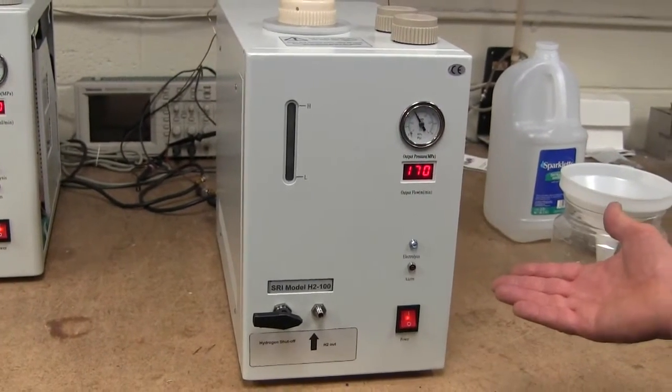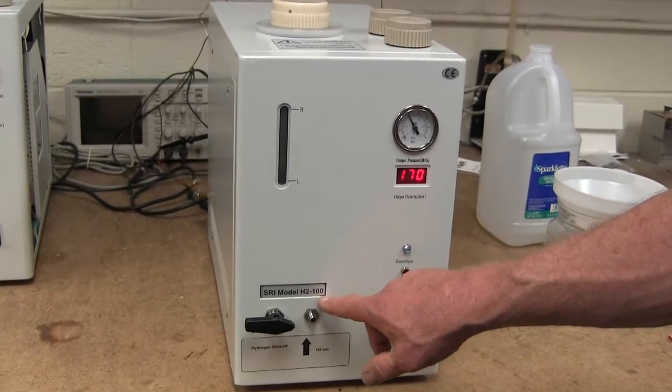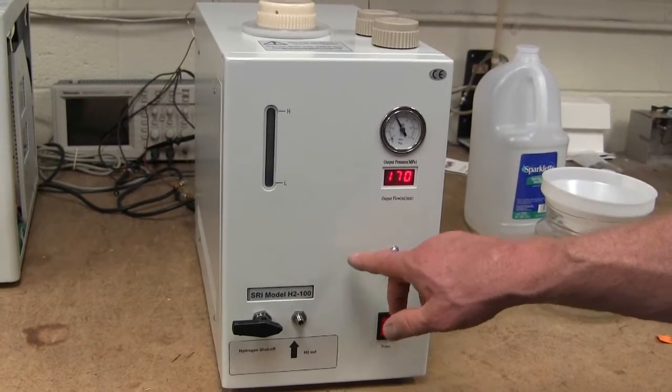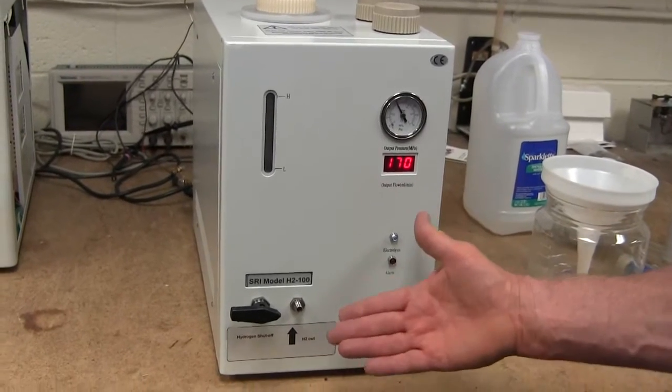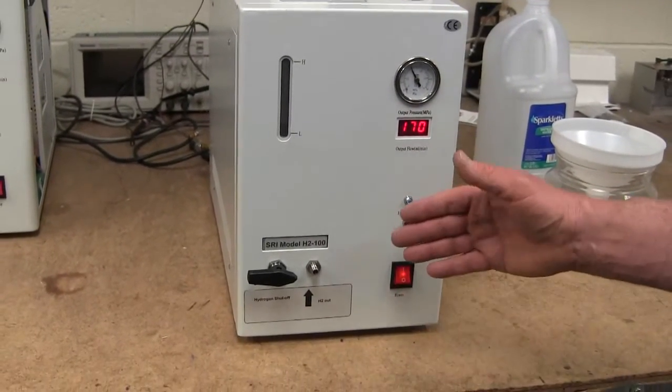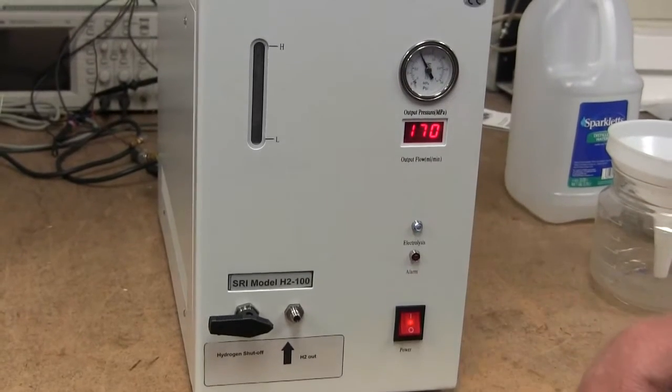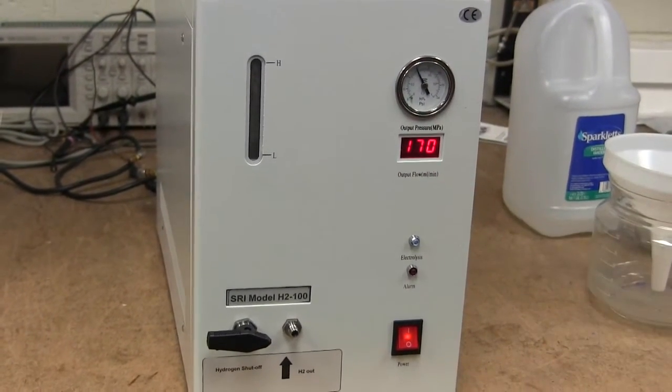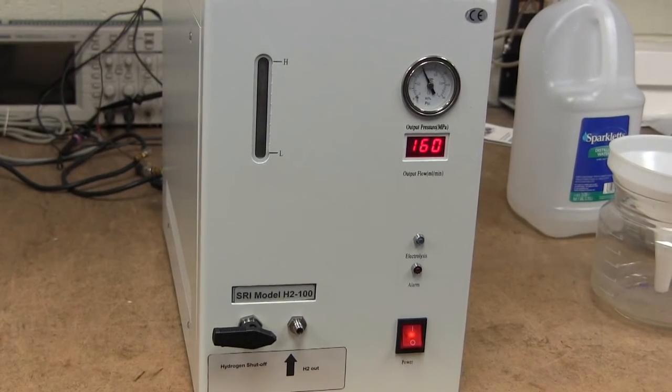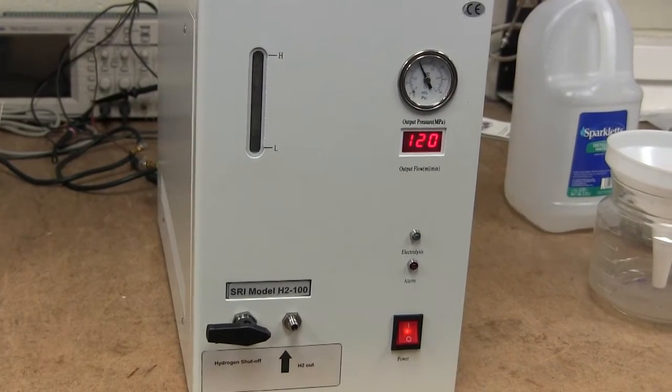We call this an H2-100 to reinforce the idea that 100 is really the maximum amount of gas. 100 milliliters a minute is the maximum amount of gas that we really want you to let escape from the hydrogen generator. If you run it at its maximum all the time, then it's going to break at some point. So it's better to run it at less.